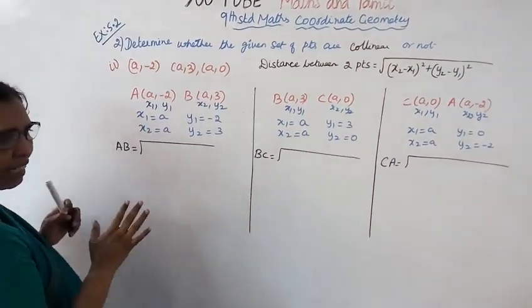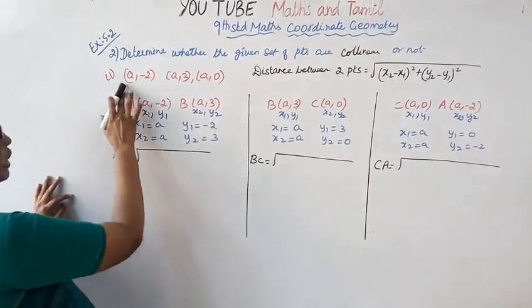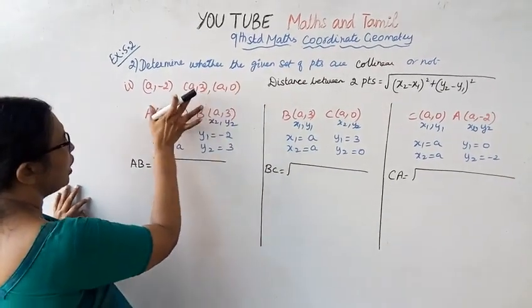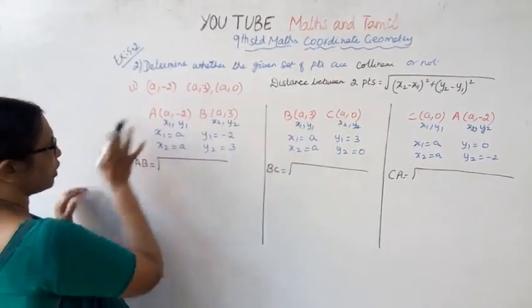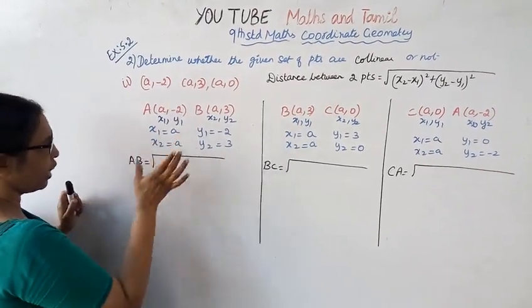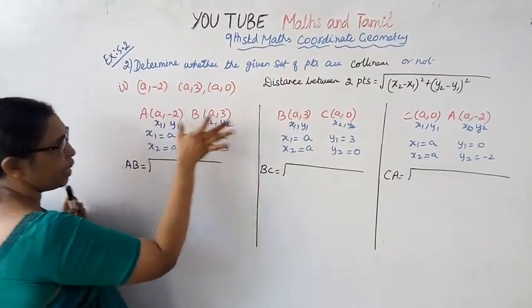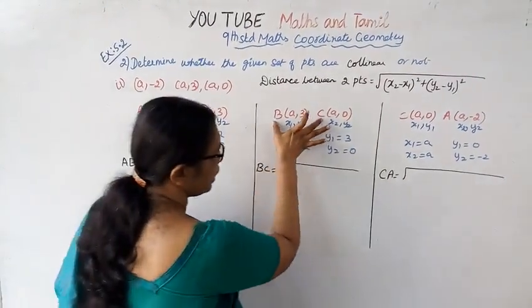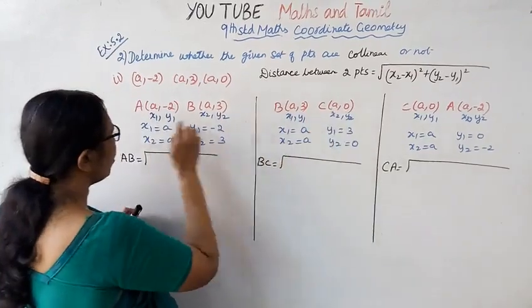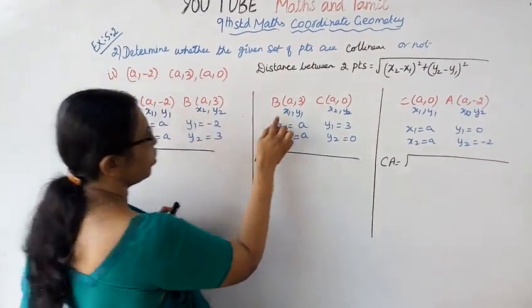Using this formula, we take three points A, B, C. To prove collinear, we find distances AB, BC, and CA. For each pair of two points, we assign coordinates x1, y1 and x2, y2. For AB: x1 is a, x2 is a, y1 is minus 2, y2 is 3.